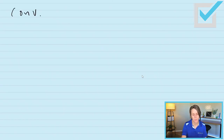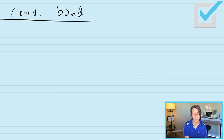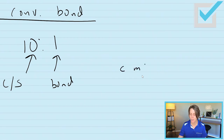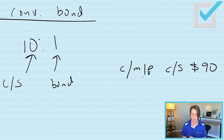Let me give you an example of a convertible bond. Let's say the convertible bond has a 10 to 1 conversion ratio — for your one bond, you can get 10 shares of the issuer's common stock. And let's say the current market price of common stock is $90 a share.